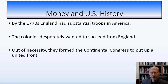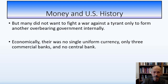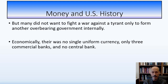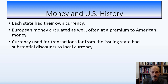In the 1770s, England had substantial troops in America and the colonies desperately wanted to secede. Out of necessity they formed the Continental Congress. Economically, there was no single uniform currency — only three commercial banks and no central bank. In colonial times we had a hodgepodge of currencies: each state had its own currency and each bank, if it existed, issued paper money. No uniform currency.